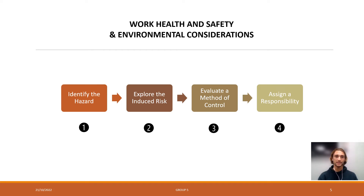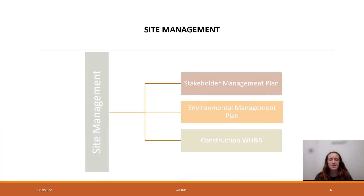We can now transition into the next deliverable of the management plan: site management. The site management plan has a lot of factors involved to be accurate and inclusive. Although the plan will update and change with the project conditions, it is important to have an in-depth understanding before commencing each phase. The stakeholder management plan focuses on the important influences all types of stakeholders have on the project. Our team's plan is to keep communication open to all stakeholders, whether through formal or informal lines of communication.